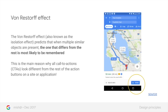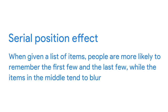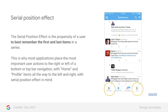A call to action, or CTA, is a visual prompt that tells the user to take action. For example, the Start button on Google Maps is bright blue on a white background, which makes it stand out. The second psychological phenomena, the serial position effect, says that when people are given a list of items, they are more likely to remember the first few and the last few, while items in the middle tend to blur. This is why most applications and websites position the most important user actions toward the far right or far left of a top navigation bar.